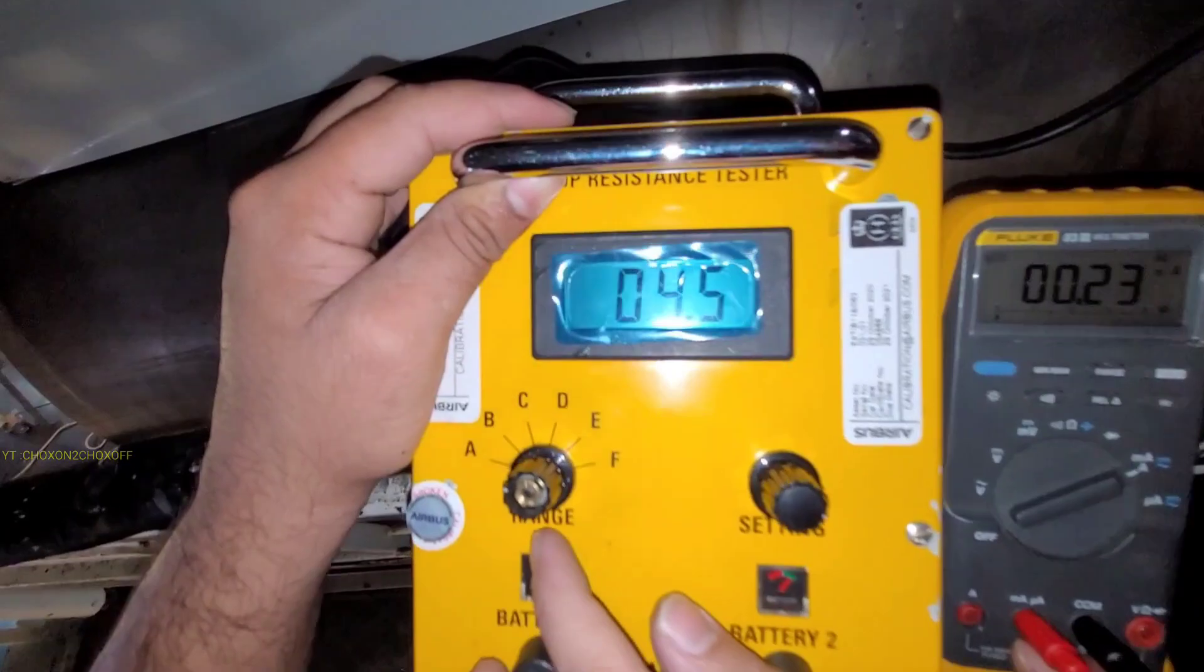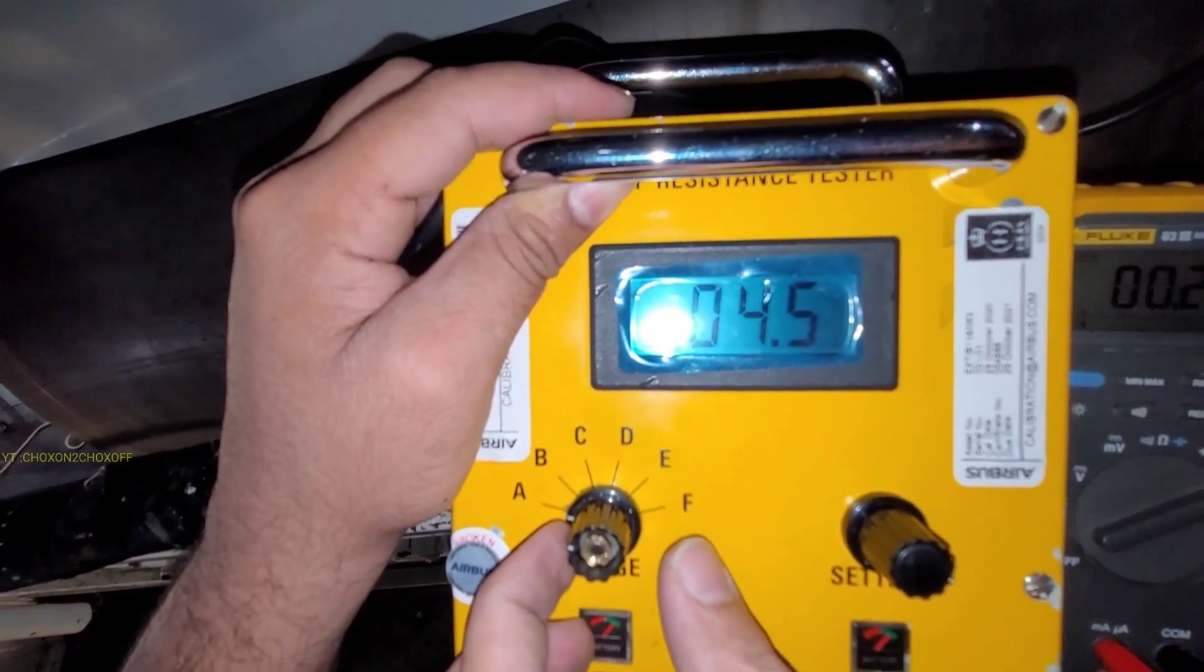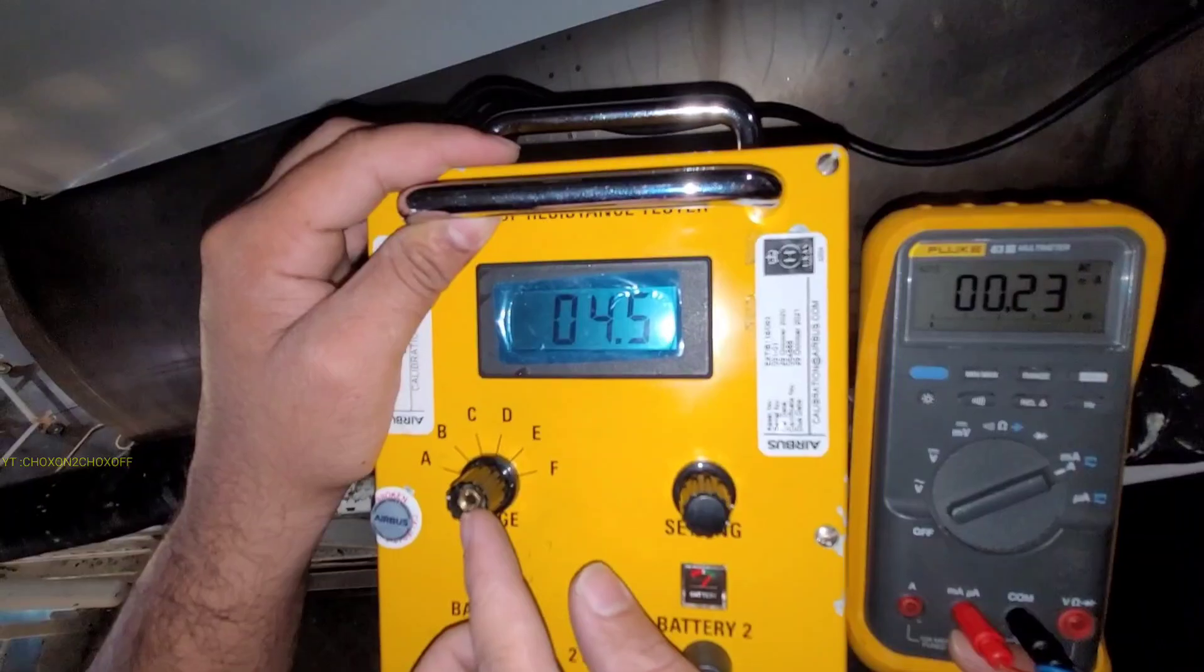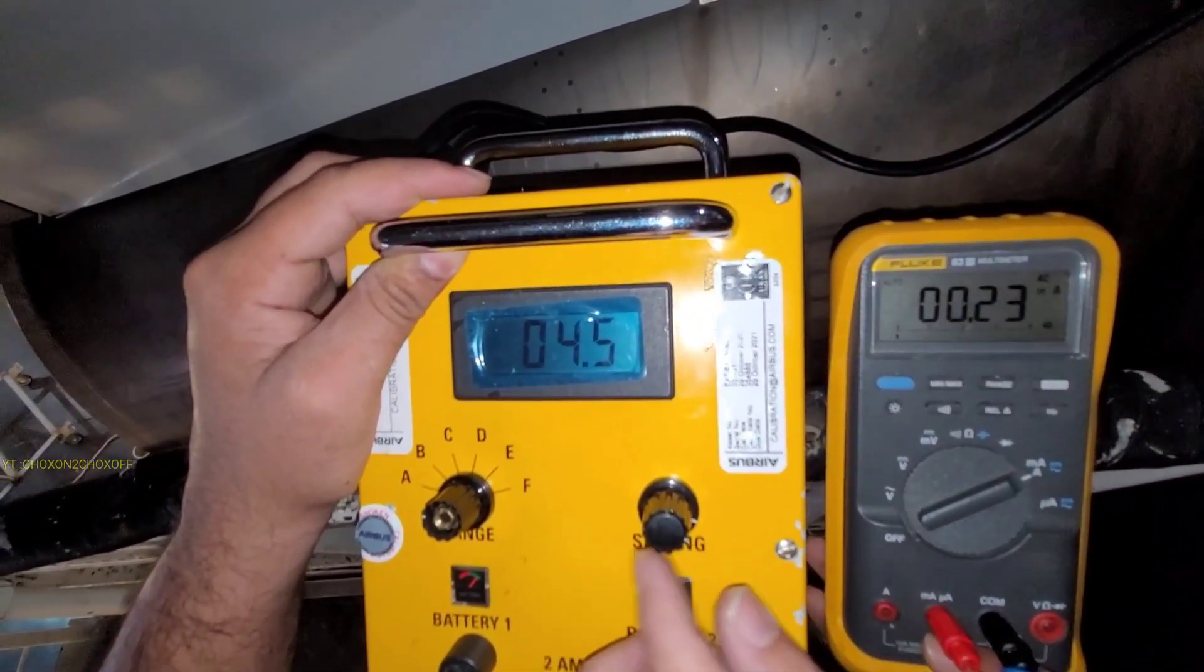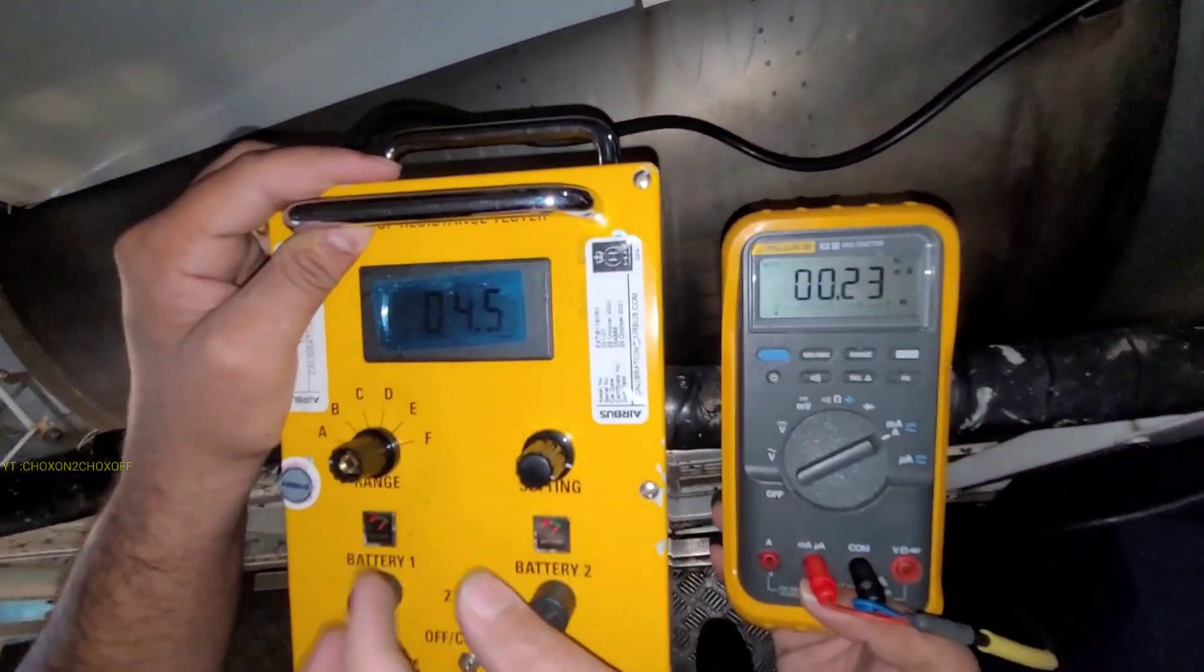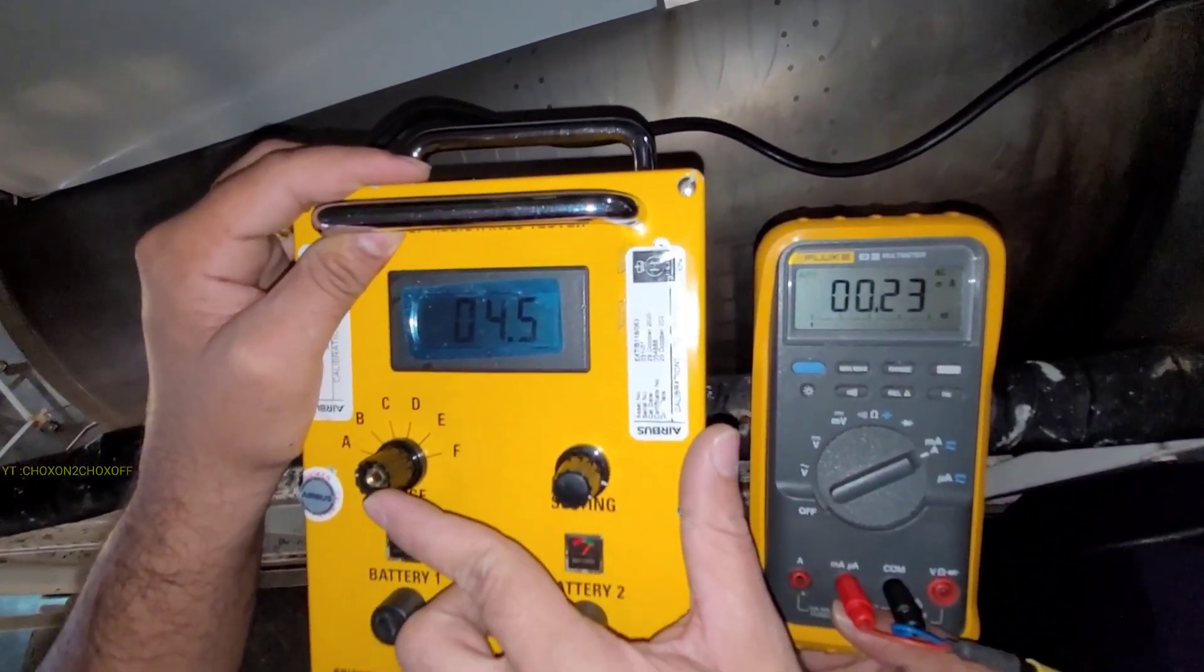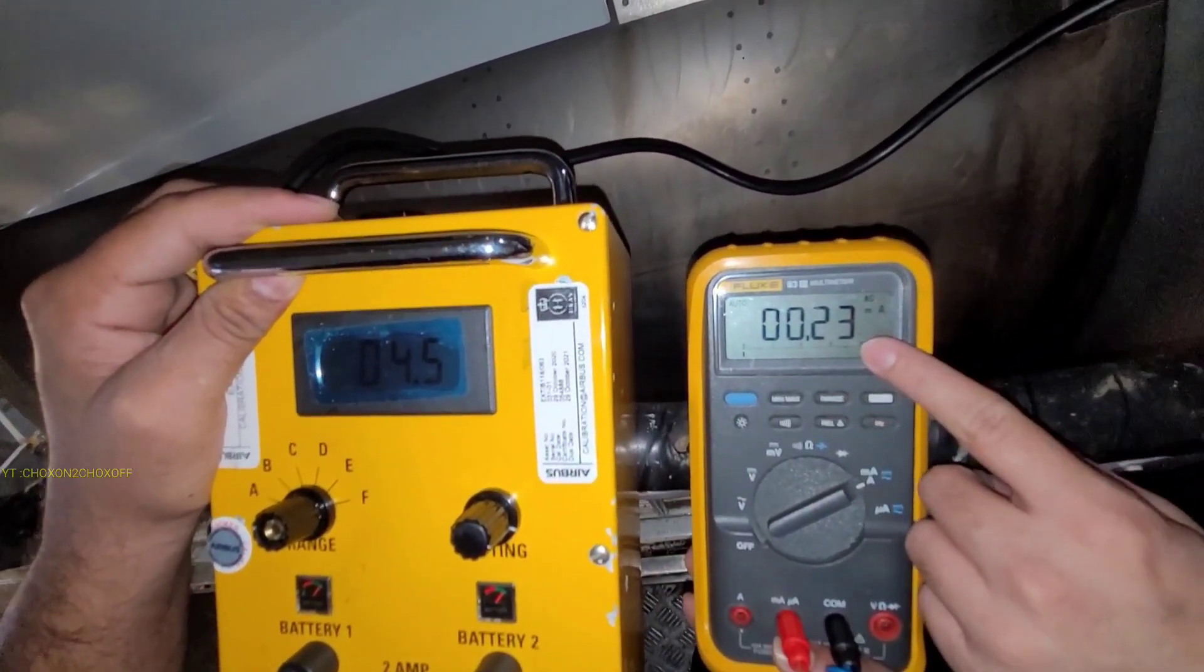We'll check the battery first, it should be in green band. Now before switching on, we'll just check if it is in minimum position. This is the coarse setting and this is fine setting.